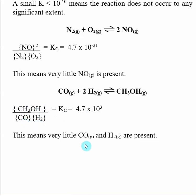So that means we would expect very little of our reactants, CO and H2, to be present and almost all of our products to be made. So we would expect there to be mostly CH3OH and very little CO and H2 present, and that means the reaction has gone virtually to completion.